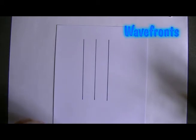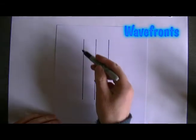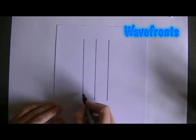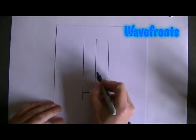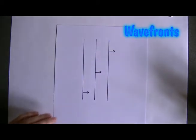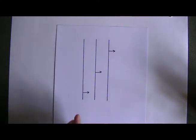If you were looking down on top of some water waves and drew a line along each wave crest, we could call those wave fronts, and they would be travelling in this direction. A Dutch scientist called Christian Huygens came up with a model to explain how the wave travels along from one wave front to the next.